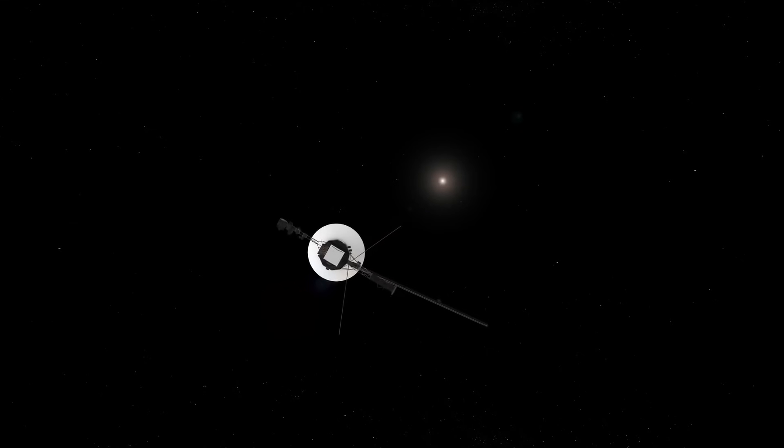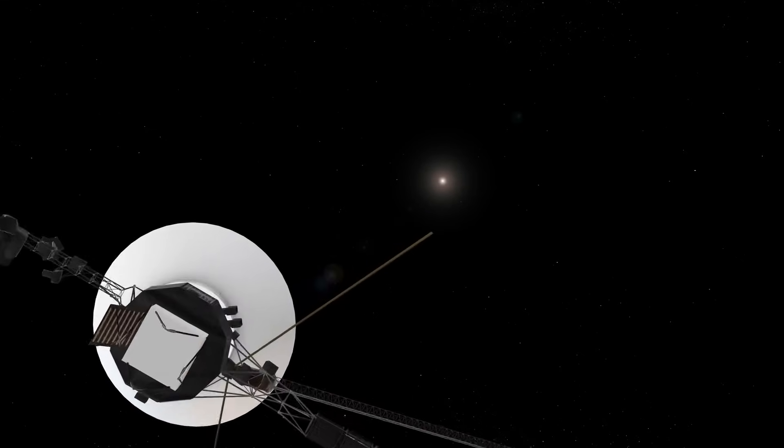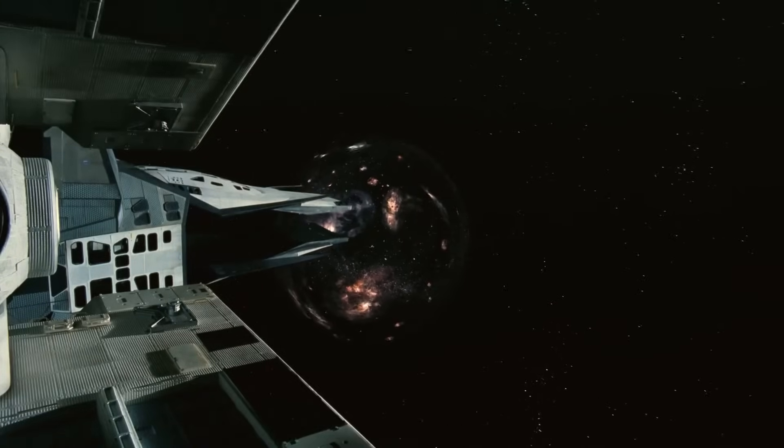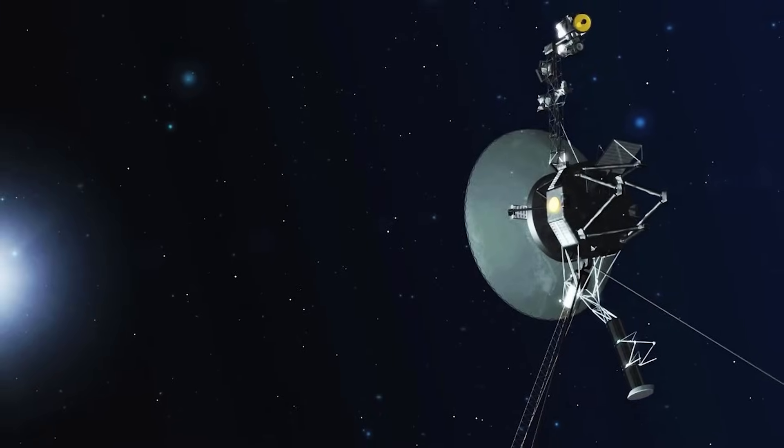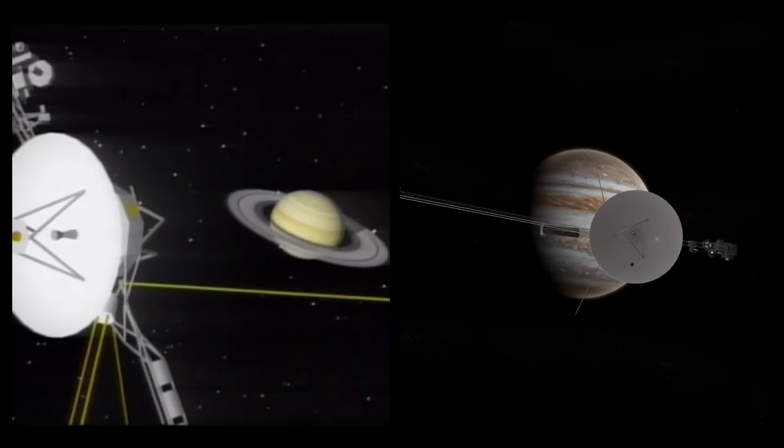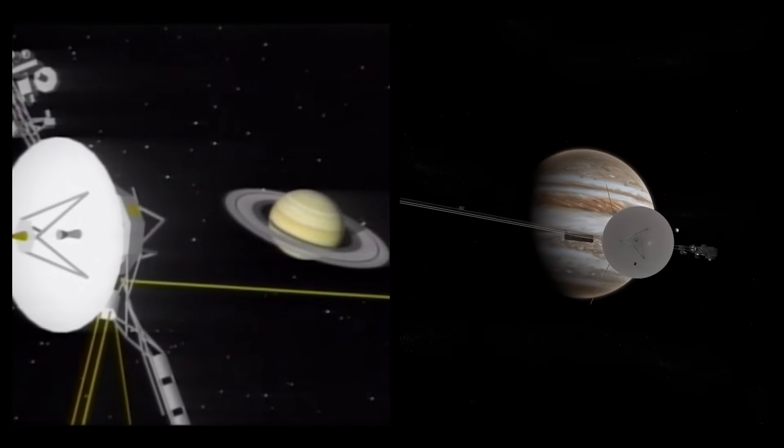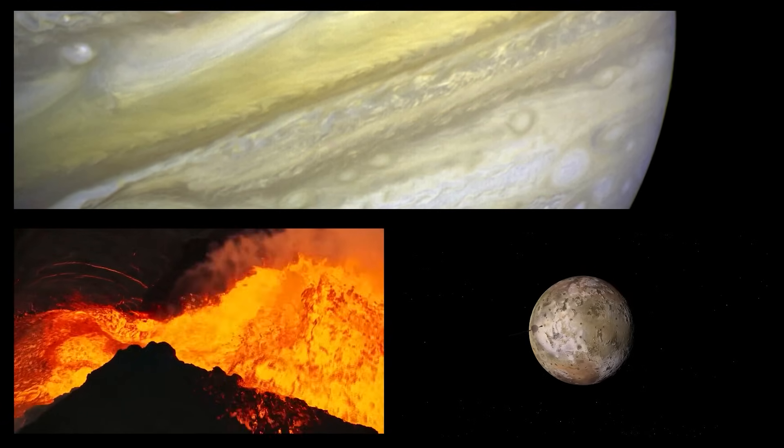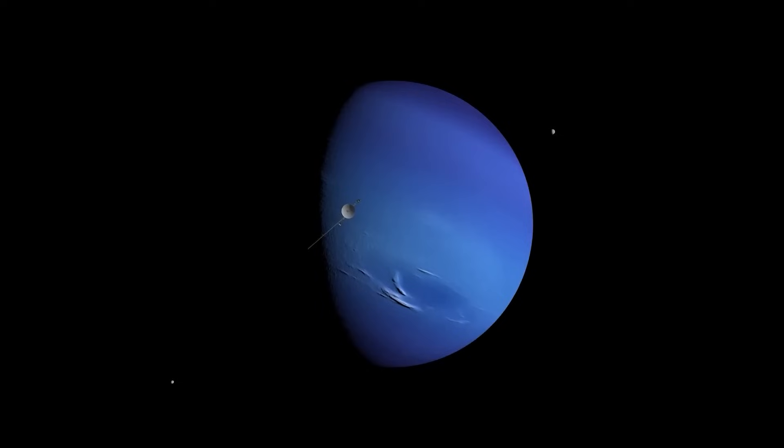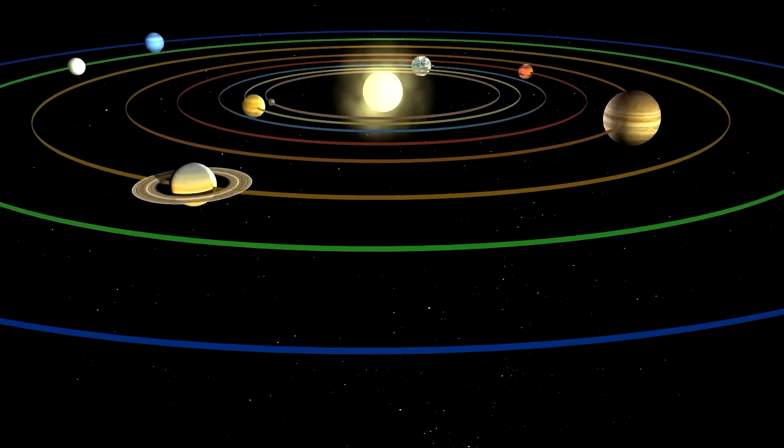When NASA's Voyager 1 launched in 1977, no spacecraft had ever journeyed so far, ushering in an era of interstellar travel. Its achievements have been unprecedented. The intrepid probe visited Jupiter and Saturn, discovering new moons, active volcanoes, and the subtle rings around Jupiter. These early observations overturned assumptions about the outer solar system.